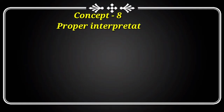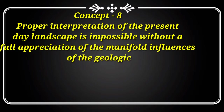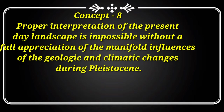Concept number eight states: proper interpretation of the present-day landscape is impossible without a full appreciation of the manifold influences of geological and climatic change during the Pleistocene. The geological and climatic conditions and changes of the Pleistocene period have influenced the topographic features of the present day. Glaciation affected areas of millions of square miles, though the exact figure of how much area was covered with snow has not been determined. Although glaciation was significant during the Pleistocene, it should also be noted that the process of diastrophism continued in the Pleistocene period.